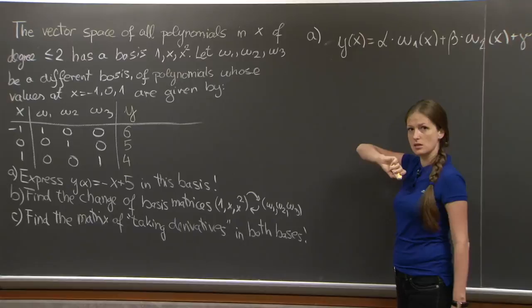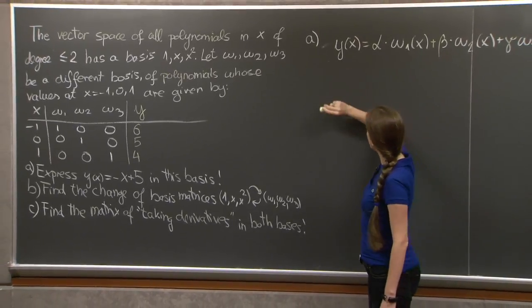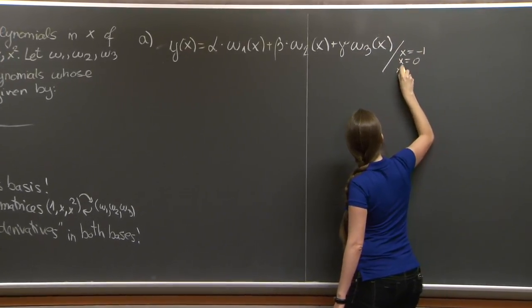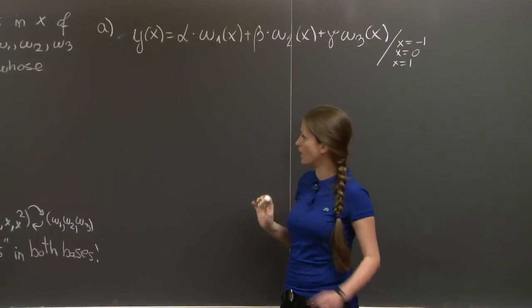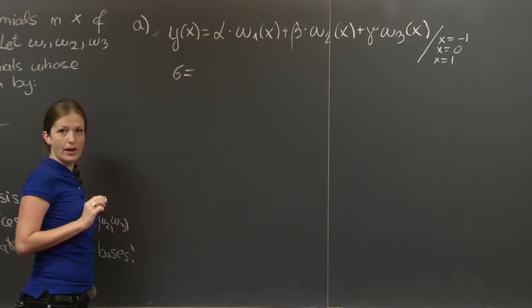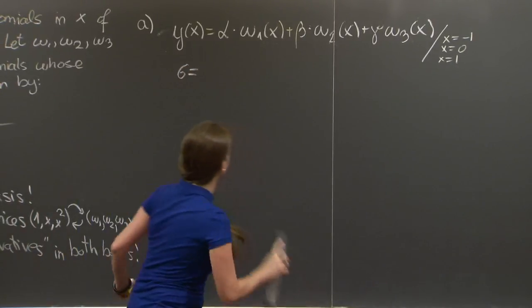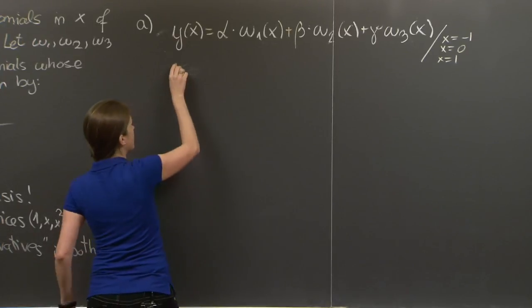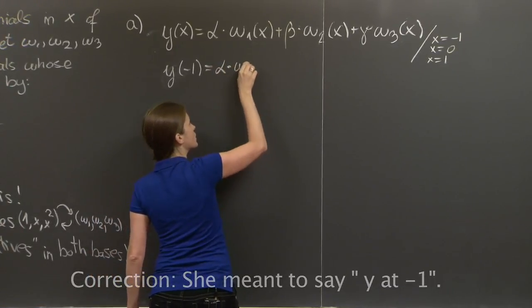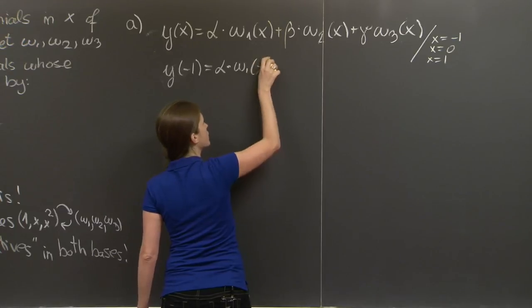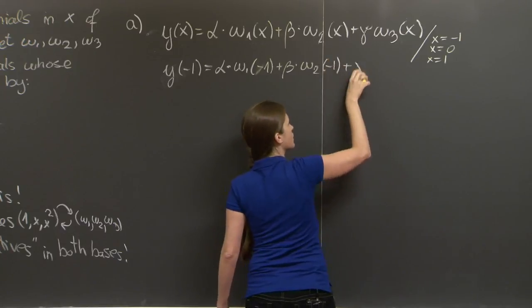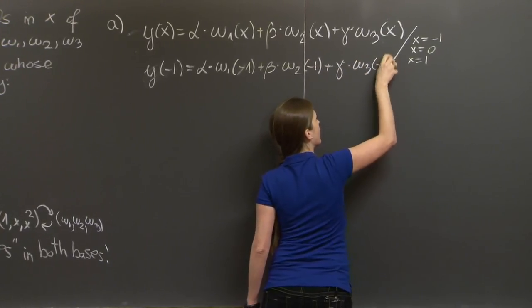And let me, instead of considering this equation, let me evaluate it at x = -1, x = 0, and x = 1. So what I get is that y at -1, which is a number, equals alpha times w1 at -1, which is a number, plus beta times w2 at -1, plus gamma times w3 at -1.